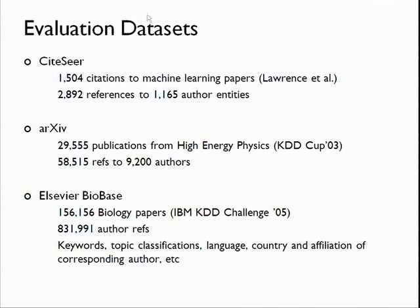Let me get to some experiments. These are three different citation datasets — co-author networks. The first is a small dataset describing computer science, particularly machine learning papers. The second, arXiv, describes high-energy physics datasets. The third is a larger dataset describing a collection of biology papers. In the first two, all we had was author names, but in the third we had additional attributes: keywords, topic, language, and so on, which we made use of in the relational clustering algorithm.